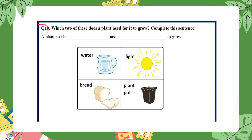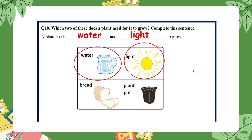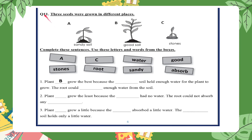Question ten: which two things does a plant need to grow? Complete the sentence — a plant needs blank and blank to grow. Is it water, light, bread, or a plant box? Remember, plants need the right conditions to grow and be healthy: the right amount of warmth, air, water, and light. So a plant needs water and light to grow.